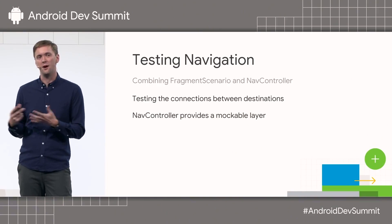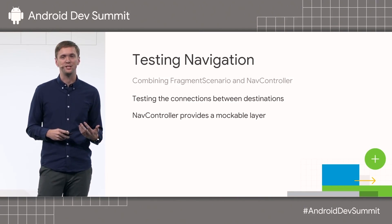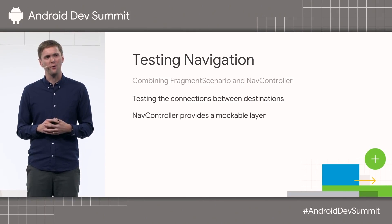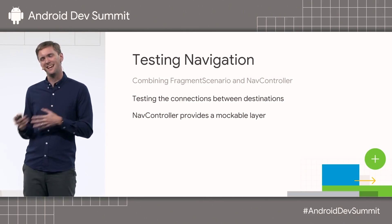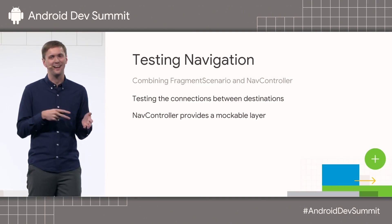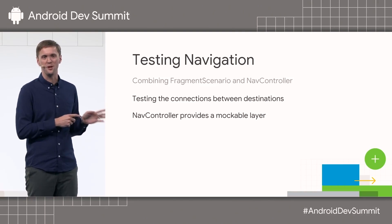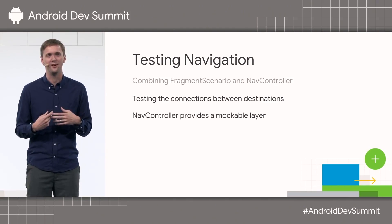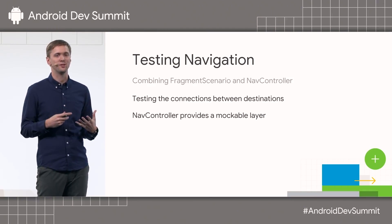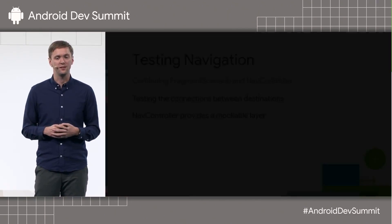We have a mockable layer. One of the things we found when building Navigation is that most companies, once they got to a certain point and wanted to add testing, realized they couldn't really test startActivity calls. So they built their own navigator to mock those out. Well, that layer is handled for you — it's called NavController. We test NavController, so now in your activities you can just mock out that NavController and confirm that you're calling the right navigate calls.